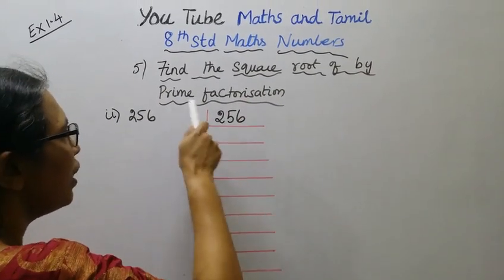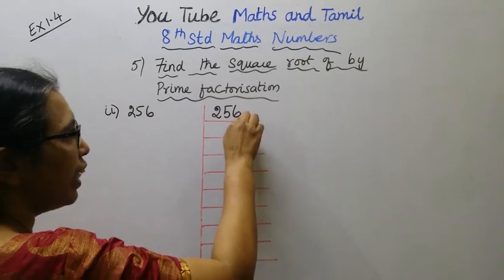Find the square root of 256 by prime factorization.